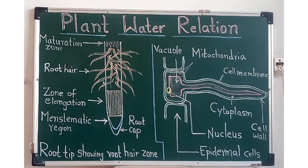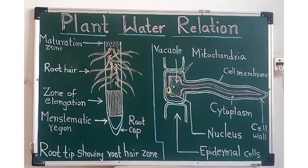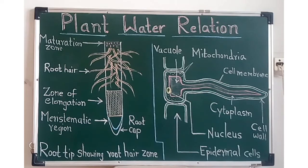This is the diagram of a typical root or root tip showing the root hair zone, and this is the diagram of a single root hair. The epidermal cells of the root are also called epiblema. Each root hair is about 1 to 10 mm long and is a tube-like structure, hence it is called tubular.